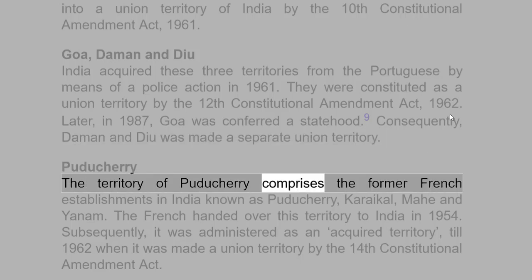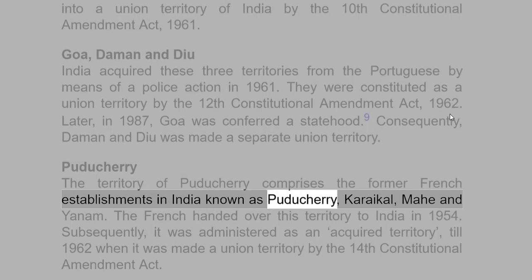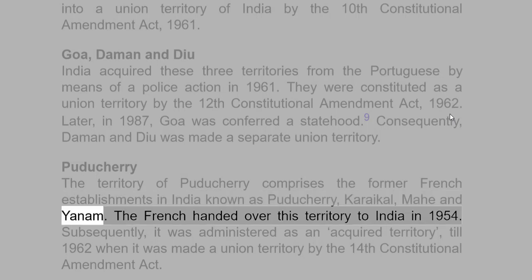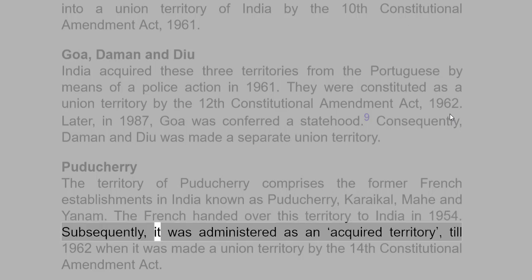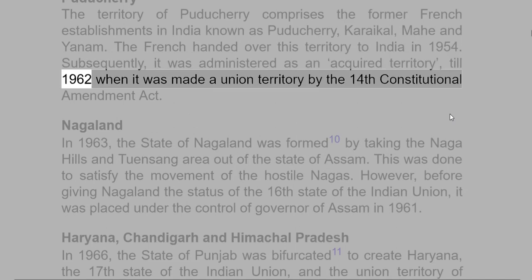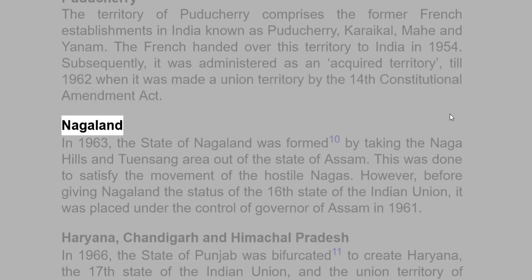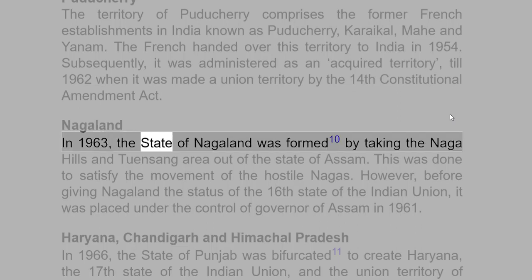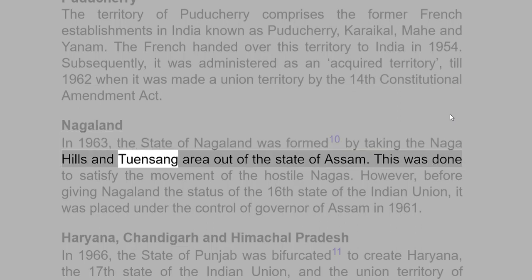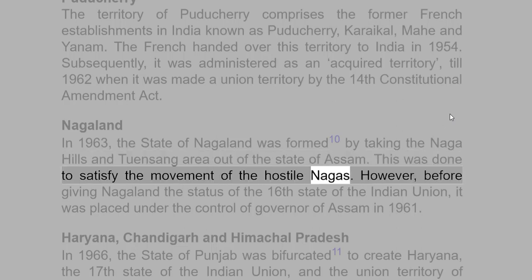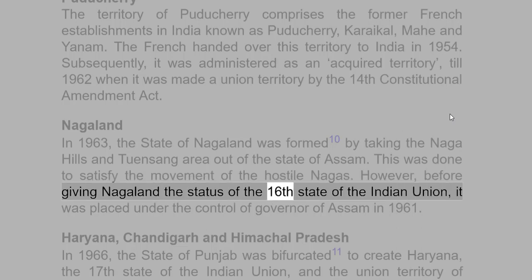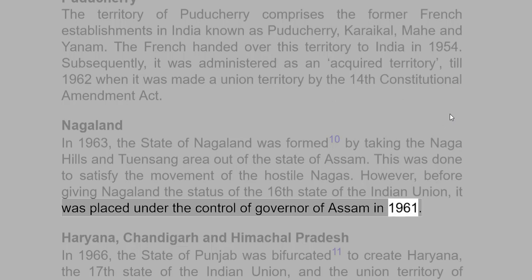The territory of Puducherry comprises the former French establishments in India known as Puducherry, Karaikal, Mahe and Yanam. The French handed over this territory to India in 1954, and it was administered as an acquired territory till 1962, when it was made a Union Territory by the 14th Constitutional Amendment Act. In 1963, the state of Nagaland was formed by taking the Naga Hills and Tuensang area out of the state of Assam, to satisfy the movement of the hostile Nagas. Before giving Nagaland the status of the 16th state of the Indian Union, it was placed under the control of the Governor of Assam in 1961.